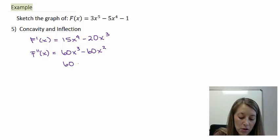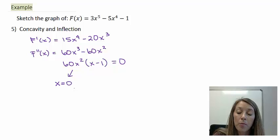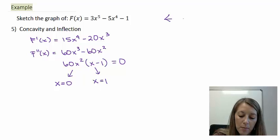Now I know I need to set that equal to zero, so let me go ahead and factor this a little farther by pulling out a 60x squared, leaves me with x minus one. So when I set that equal to zero, that gives me the solution x equals zero, multiplicity two, and x equals one.